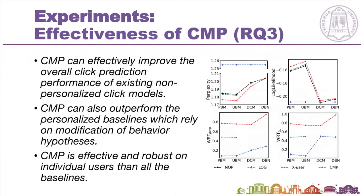The third research question is: can the click model personalization framework improve the performance of existing click models? From the experimental results, we find that CMP can effectively improve the overall click prediction performance of existing non-personalized click models, and also outperform the personalized baselines that rely on modification of behavior hypotheses. CMP is effective and robust on individual users compared to all baselines.